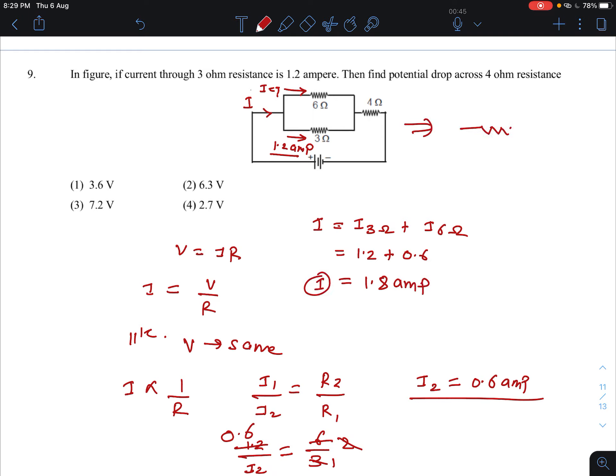Now if we find the equivalent, 6 is parallel with 3 and this is 4 ohm. These two are in series. How much current is going from this? 1.8 ampere. The same current will go from 4 ohm.